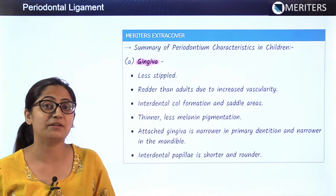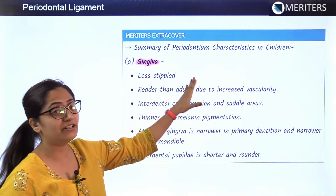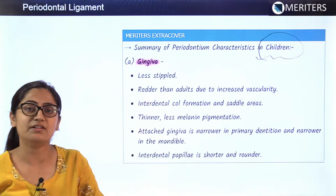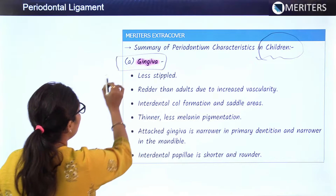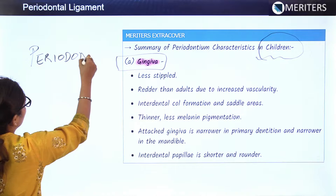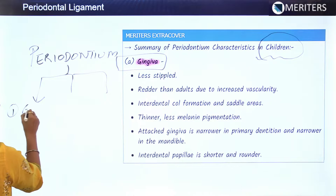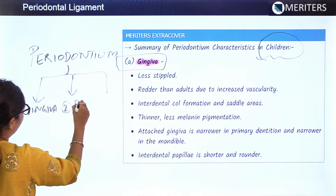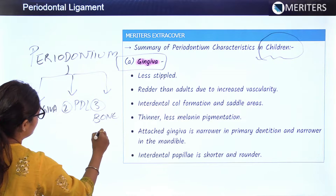This is the summary of the periodontium characteristics. Children have some distinct characteristics compared to adults that one must keep in mind. The periodontium includes three parts: first is the gingiva, second is the PDL, and third is the bone and surrounding structures.